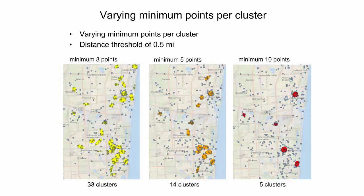These maps show how a variation in the minimum number of events required per cluster affects the cluster result. A fixed distance threshold of 0.5 miles was chosen for all three maps. The largest number of clusters — namely 33 — can be found with the least stringent requirement of a minimum of only 3 points per cluster, as shown to the left. By increasing this number to 5 and 10 points per cluster, the cluster number decreases to 14 and 5 respectively, as shown in the middle and right figures.